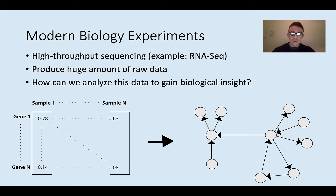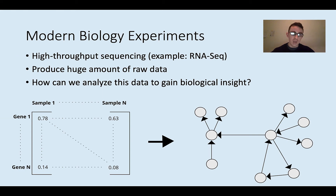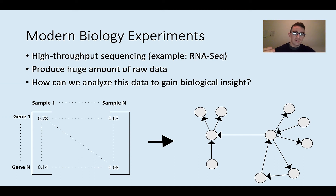All these experiments present us with the same challenge in that they produce a really large amount of raw data. For example, you might have data on the amount of RNA for like 25,000 or so genes across hundreds of samples. The challenge is: what do you do with all that raw data to actually gain insight into the biological system you're studying? It's a non-trivial challenge to use this huge amount of raw data to draw some kind of biological conclusion.